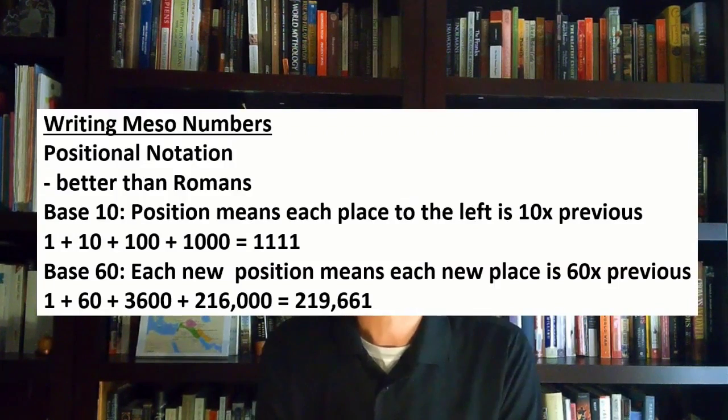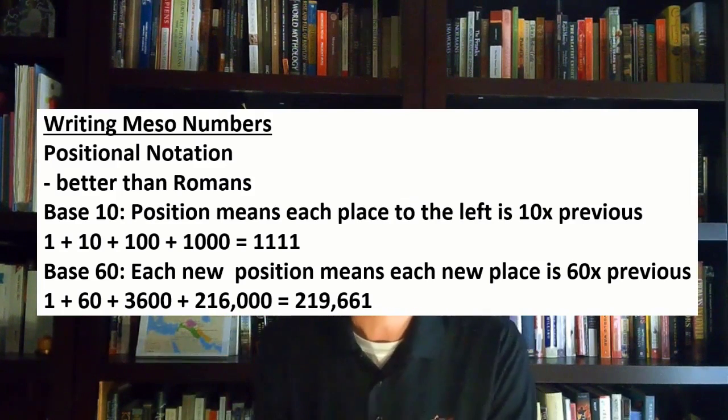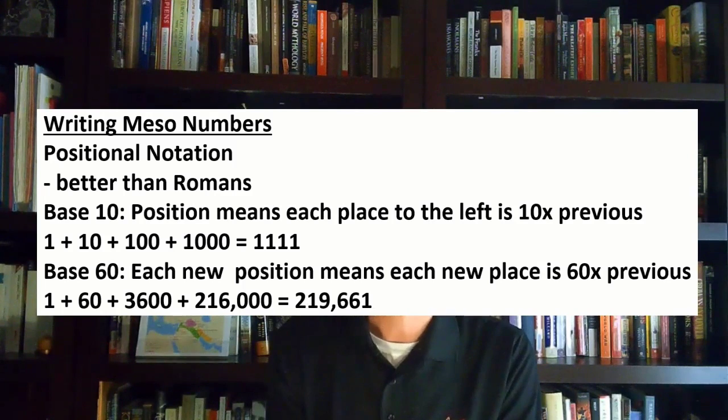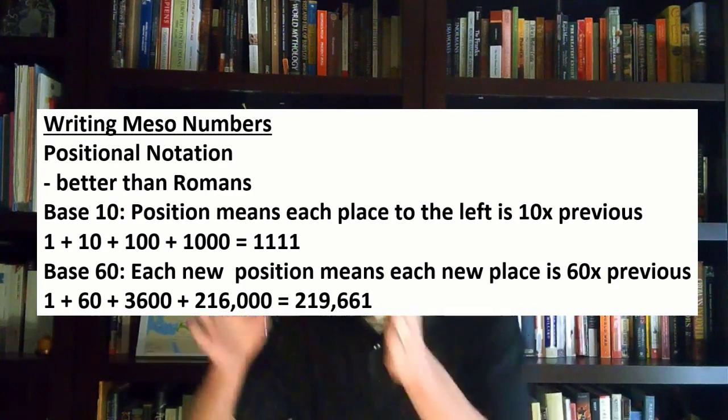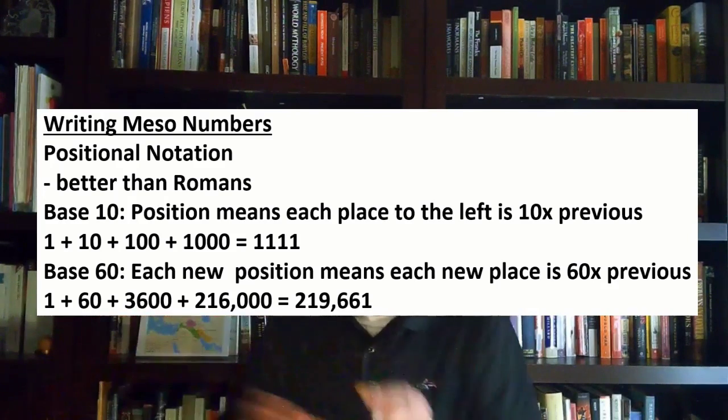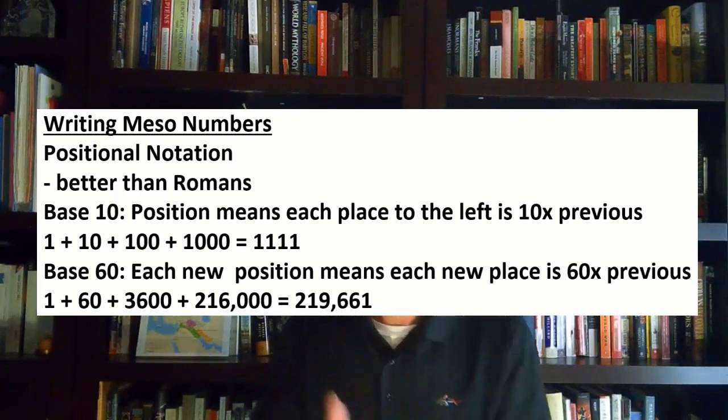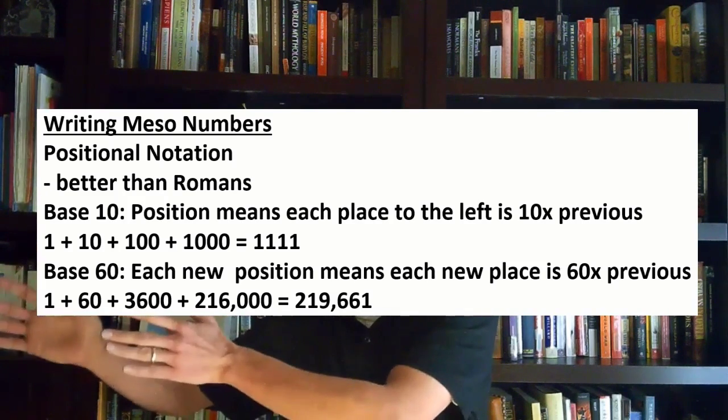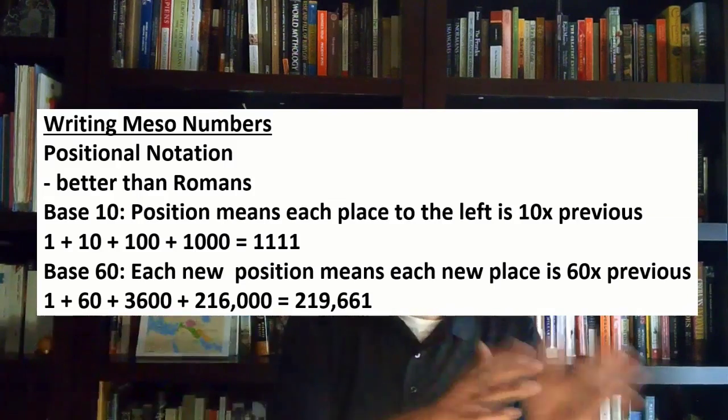Let's talk about some differences between the systems. Writing Mesopotamian numbers, their positional notation was actually better than the Romans that came long after them. They did use positional notation, which is closer to what we're used to. We use a base 10, so we have 1 plus 10 plus 100 plus 1,000, which equals 1,111. With a base 60 system, you have 1, next position 60, next position 3,600, next position 216,000. Total of those up, and you get 219,661.